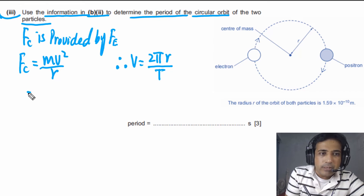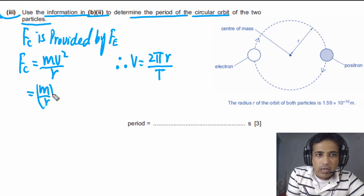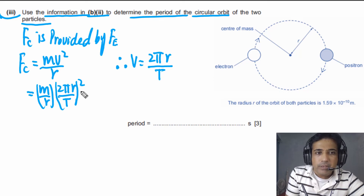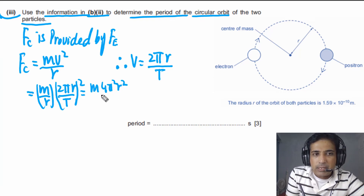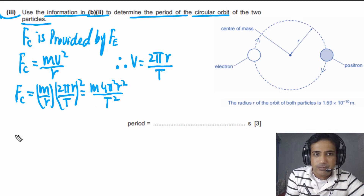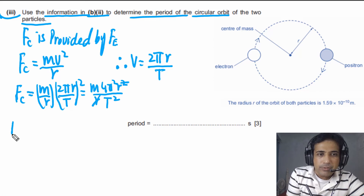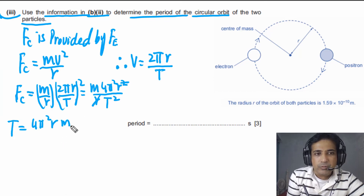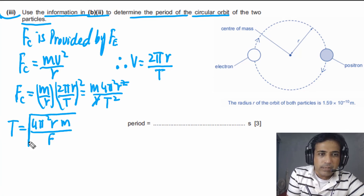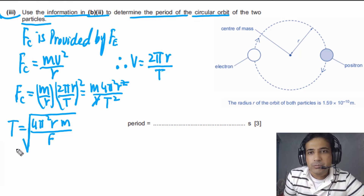We substitute v = 2πr / T into the centripetal force equation: centripetal force = m/r × (2πr / T)² = m × 4π²r² / (T² × r) = 4π²mr / T². Setting this equal to the electric force F, we can rearrange to get T² = 4π²mr / F, and therefore T = √(4π²mr / F).